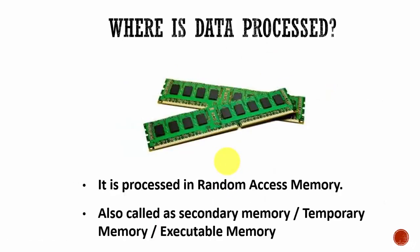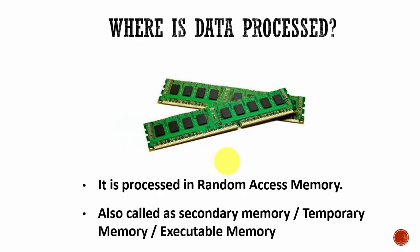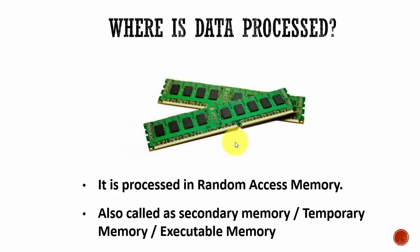Next, the question is, where is the data processed? Even though the data is stored in the permanent devices, the data is not processed in these permanent devices. We need a memory area where data can be processed. When I say processed, performing various calculations, filtering the data, sorting the data, like this. All these operations are performed in the random access memory, which we call it as RAM. It is also called as secondary memory or temporary memory or executable memory.